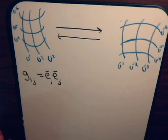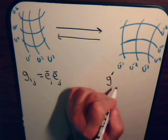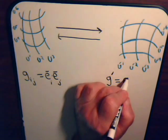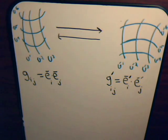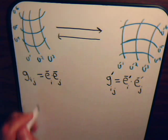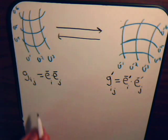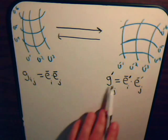Here in the u coordinate system we write g_ij. Then over here in the u' system we would have g'_ij, equal to e'_i dot e'_j. When we originally wrote the metric tensor, we can say prime and unprime, realizing that it's the variable u in each case — u and u prime.